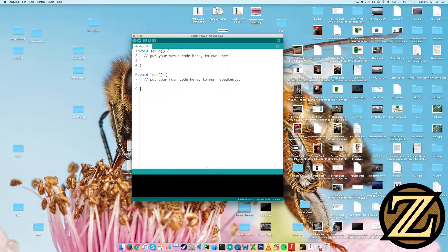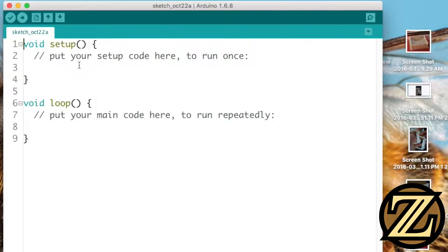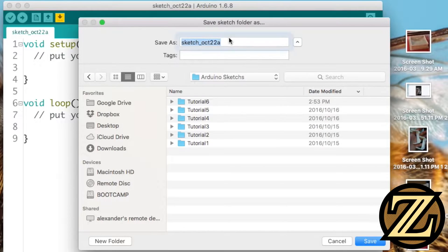The code we're going to use for this is going to be very similar to the code used to dim the LED in the previous tutorial. First let's give this a save. I'm going to call mine tutorial 7.